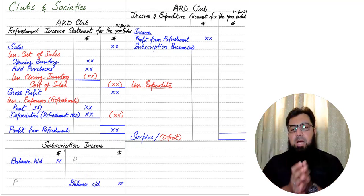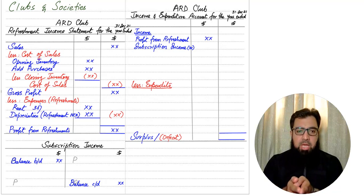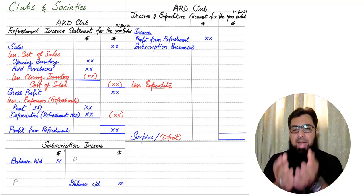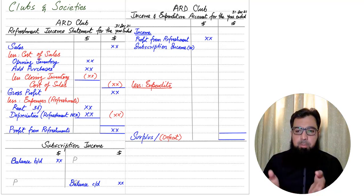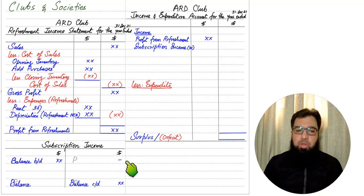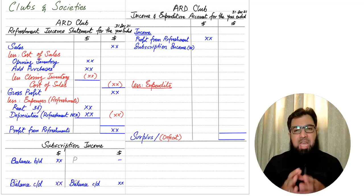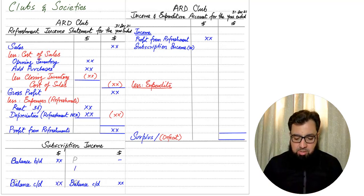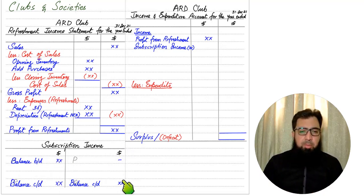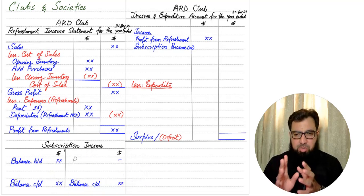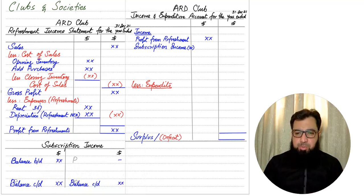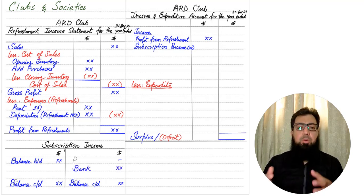Prepaid income is the opposite — members have paid the club but the club has not yet provided the facility. The amount for which the facility has not yet been provided is a liability for the club, since we may need to refund it. For a liability, the opening balance comes on the credit side and the closing balance on the debit side. In any question, not all four items will necessarily be given — we may have two or three adjustments. A subscription account only needs to be made if there is at least one accruals or prepayment adjustment.